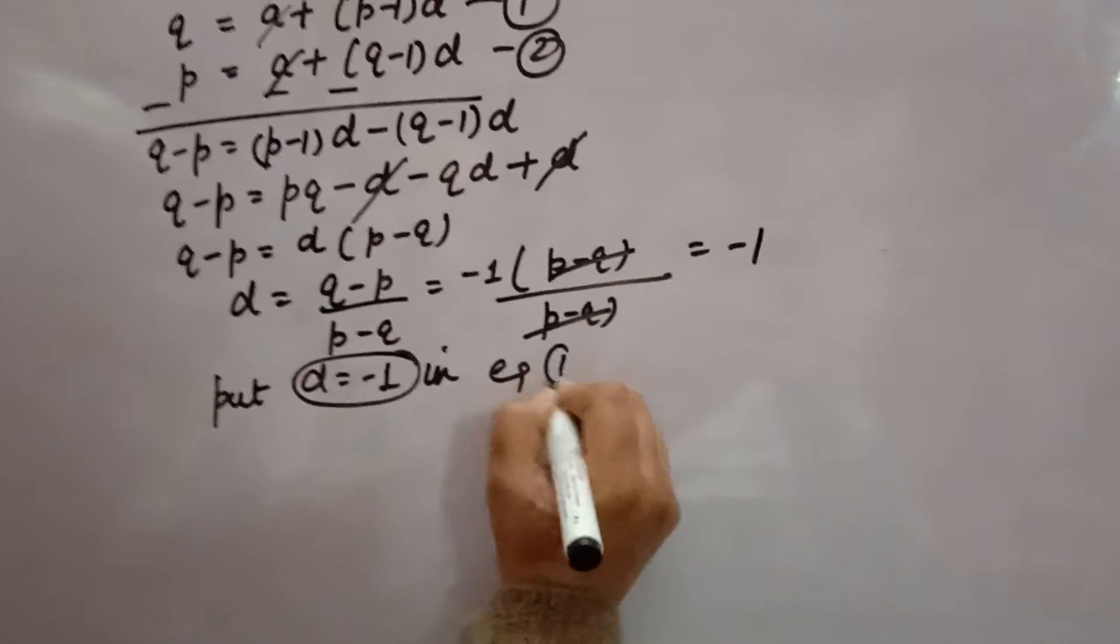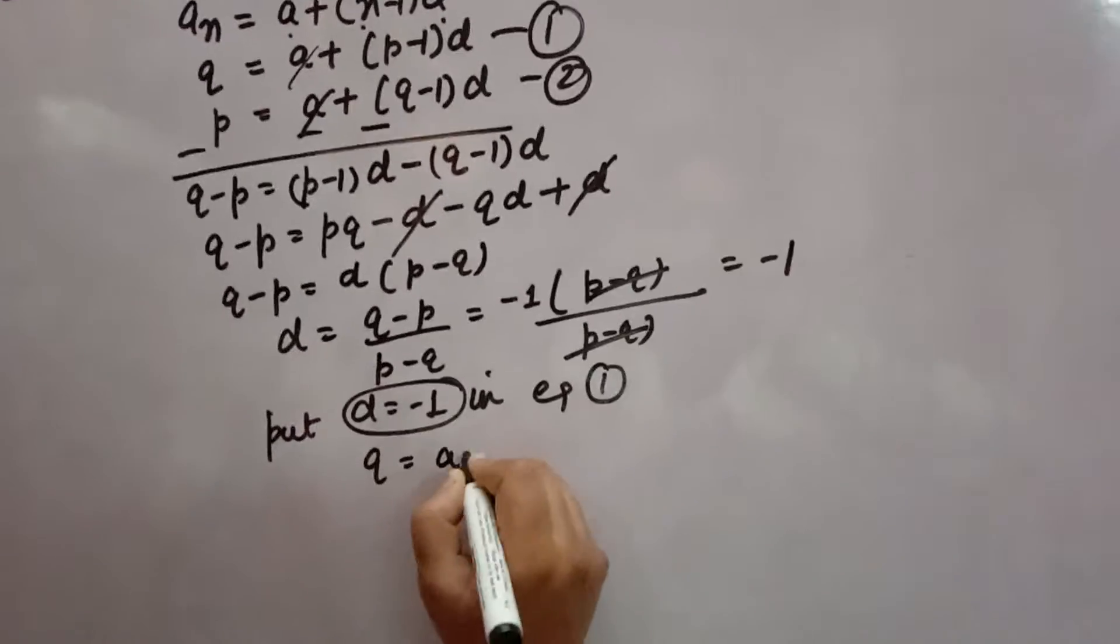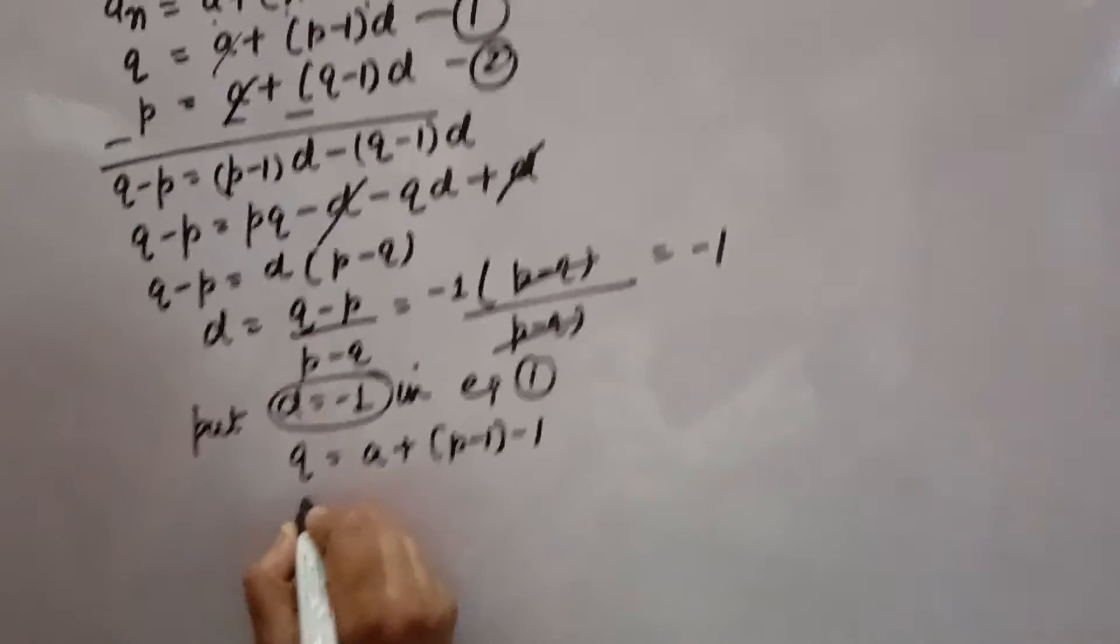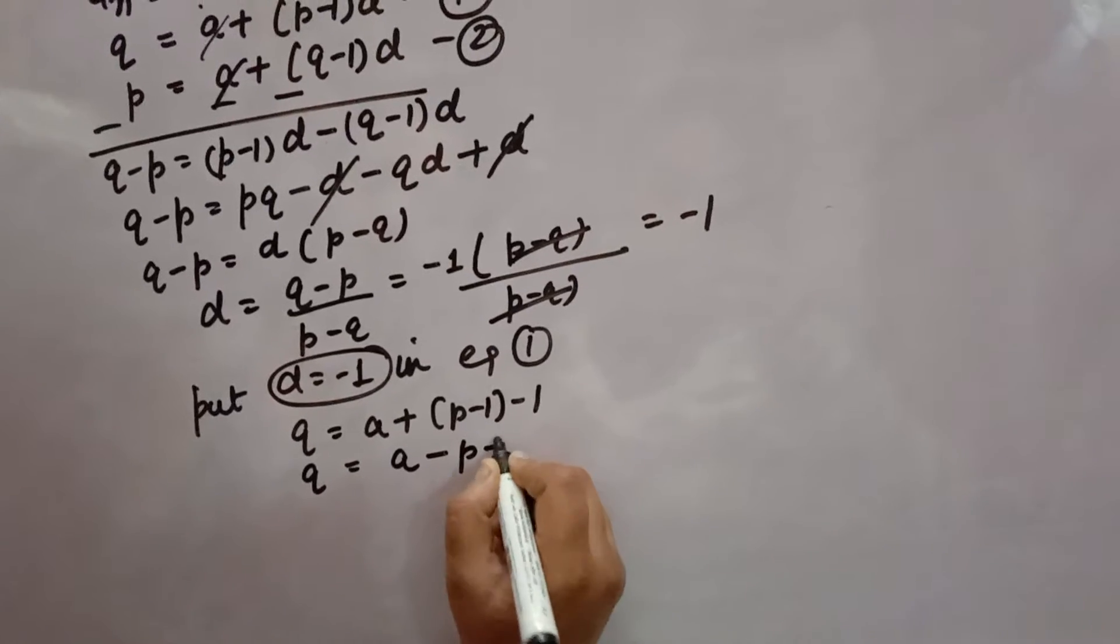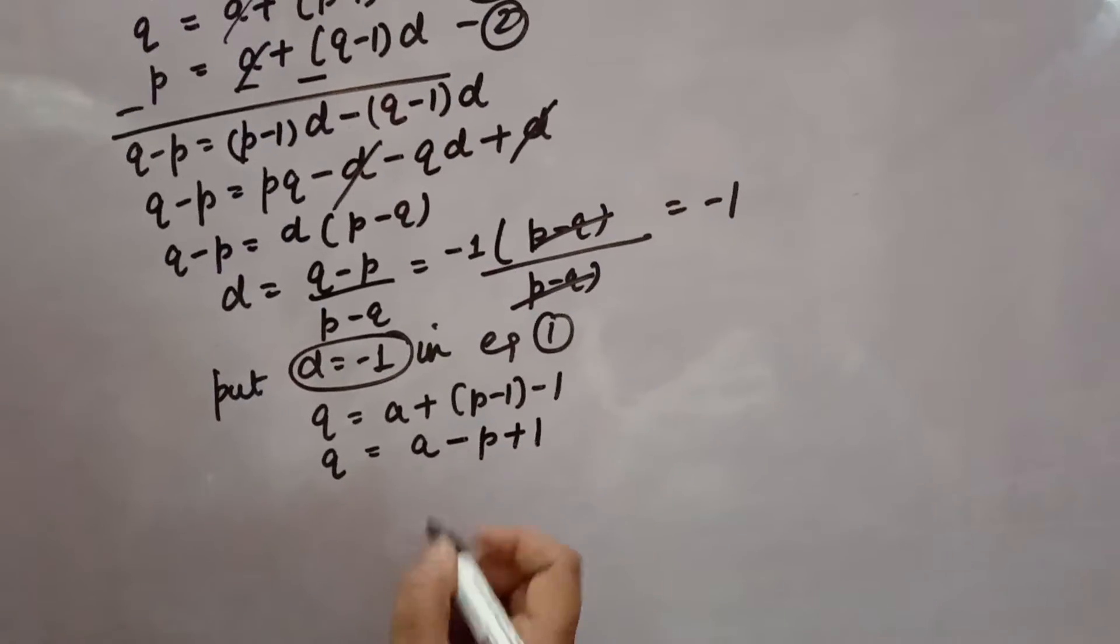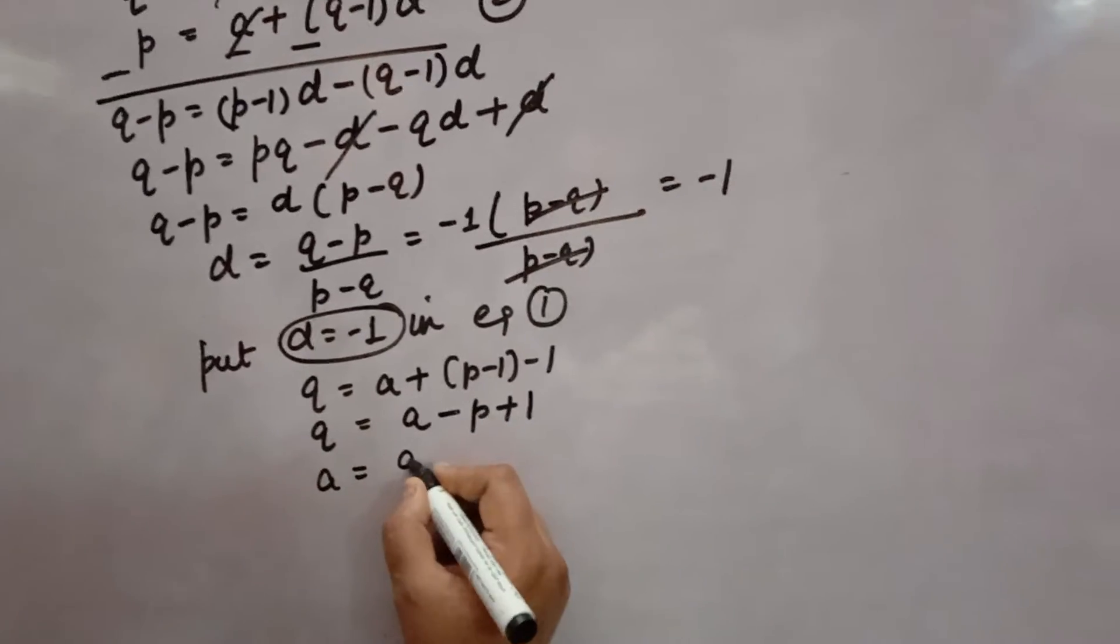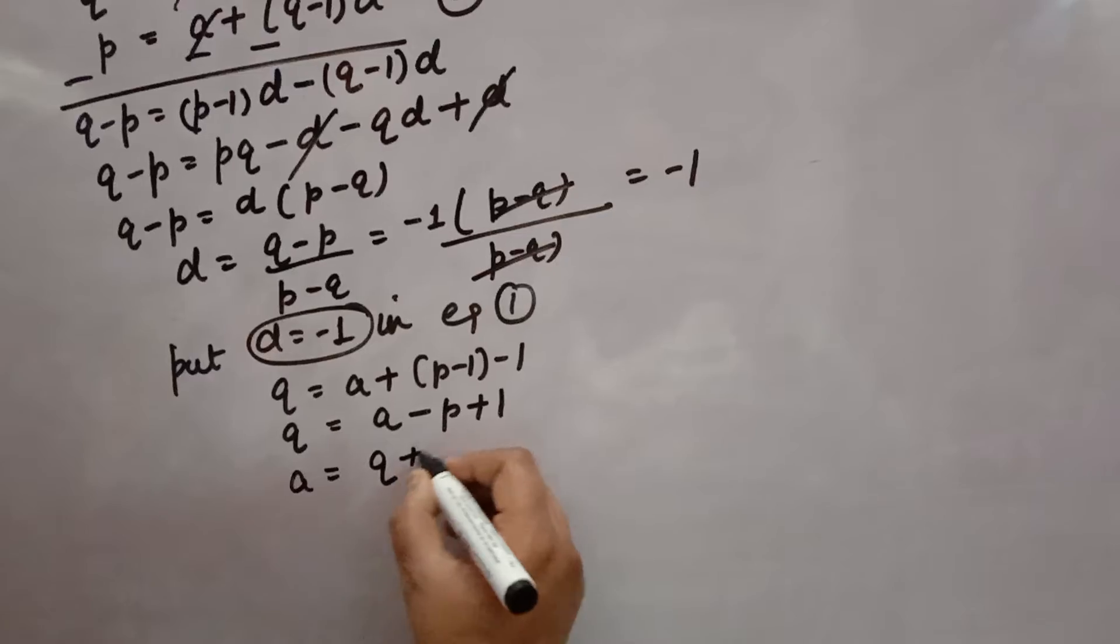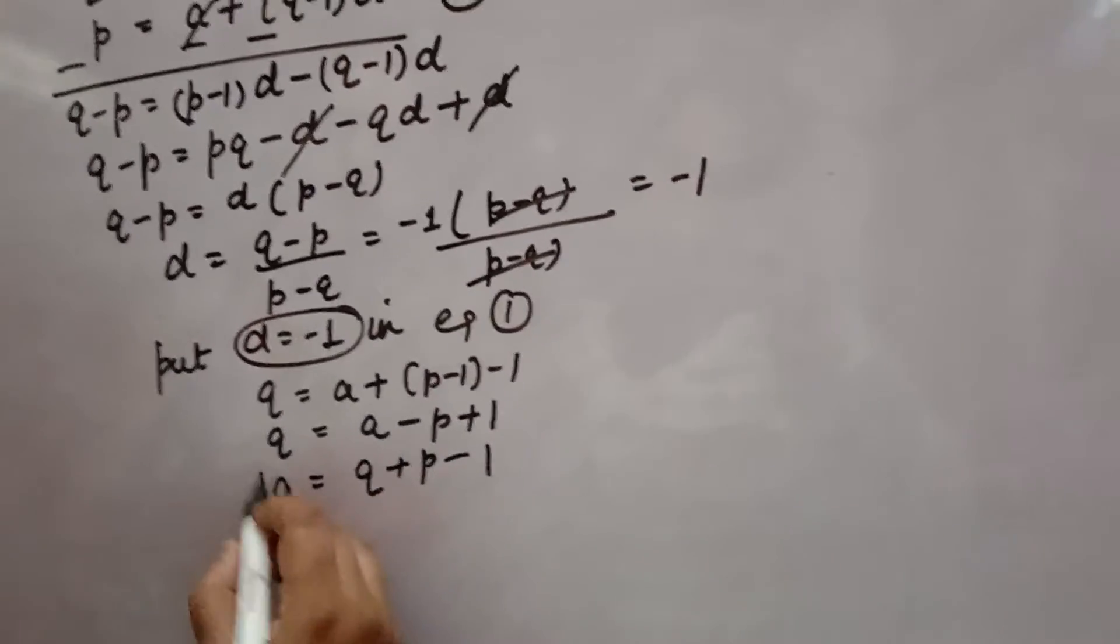Now put D = -1 in the first equation. Q = A + (p-1)(-1), so Q = A - p + 1. Solving for A: A = Q + p - 1.